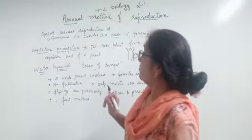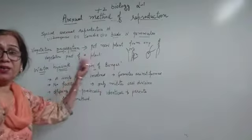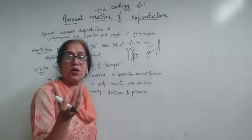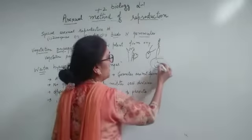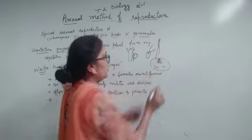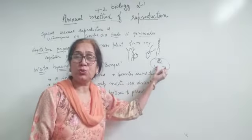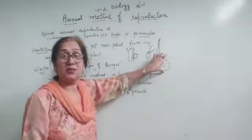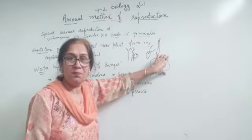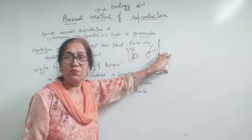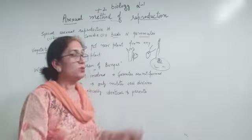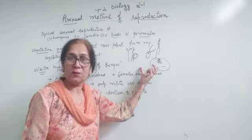For vegetative propagation, like for example, you are having potato. Yeh aalu hai aap ke paas. Aalu par aap dekho aise daanth si nazar aati, uske par you will find buds hoti hai. This is a modified stem. Aap isko zameen mein laga dijiye. And after some days, you will have the new plant. So this is vegetative propagation.